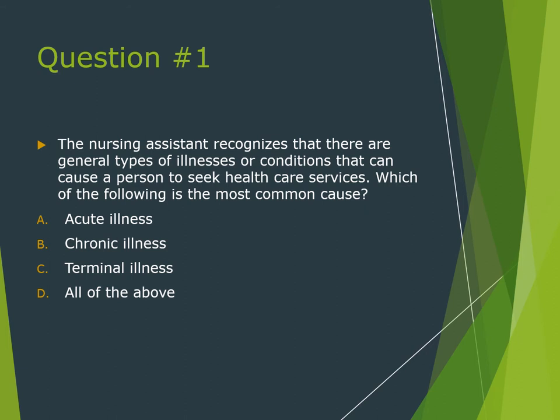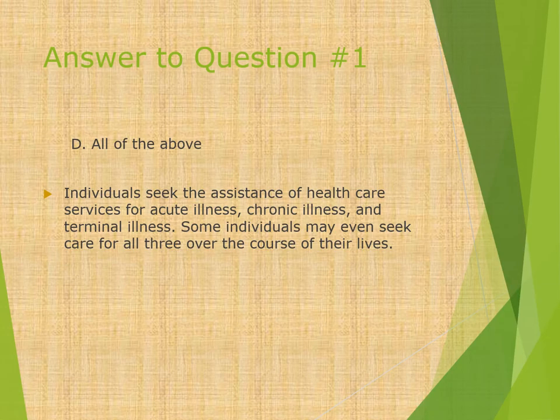Question: The nursing assistant recognizes there are general types of illnesses or conditions that cause a person to seek healthcare services. Which of the following is the most common cause? A) Acute illness, B) Chronic, C) Terminal, D) All of the above. The answer is D — all of the above. Individuals seek healthcare for acute, chronic, and terminal illness, and some may seek care for all three over the course of their lives.